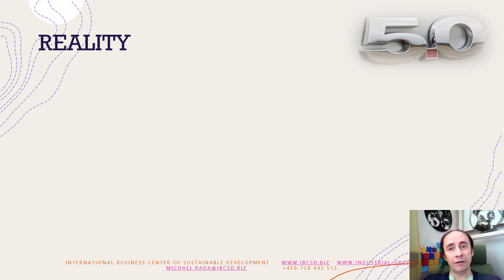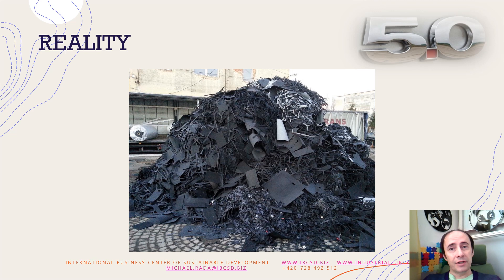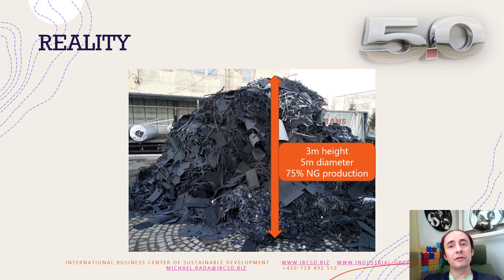How does reality look like? I can see it in factories of my clients. Generally I see similar pictures. This is one shift's output — just three meters high, five meters in diameter. And 75% of those things are QC-related topics.